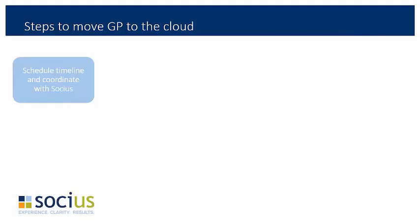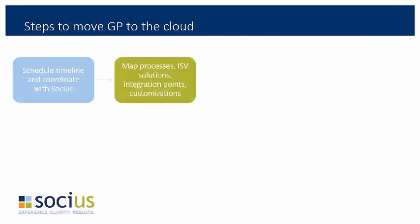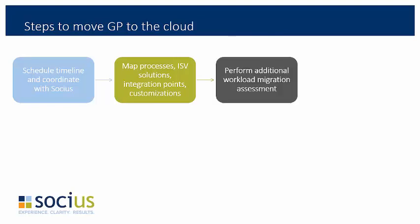The first step is to formulate a project timeline that will have the least impact on production activities and minimize downtime. We want to make sure the migration won't affect period or year-end close or heavy usage periods. We need to understand your processes and what modules you use in Dynamics GP, as well as ISV products, integration points, and customizations — including number of users, transaction volume, number of integrations, and type of customizations: VBA, Dexterity, .NET, or other programming languages.